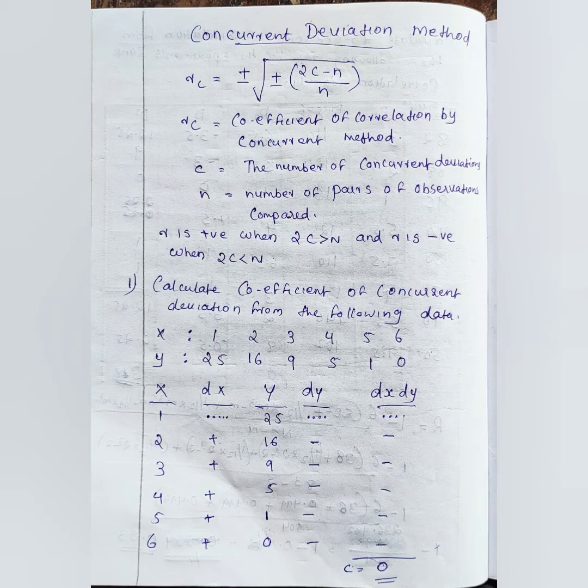We have two variables and their values. We will calculate the values of x and y, and find dx and dy. If we compare one variable with the previous value, we compare the deviation in a positive direction. If the variable increases, we assign a positive sign; if it decreases, we assign a negative sign.